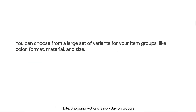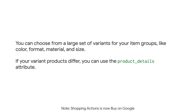As a reminder, you can choose from a large set of variants for your item groups. Some common variant attributes are color, format, material, and size. If your variant offers differ based on something our variant attributes do not cover, then you can use the product details attribute. This attribute allows you to create custom variant attributes to differentiate your products.